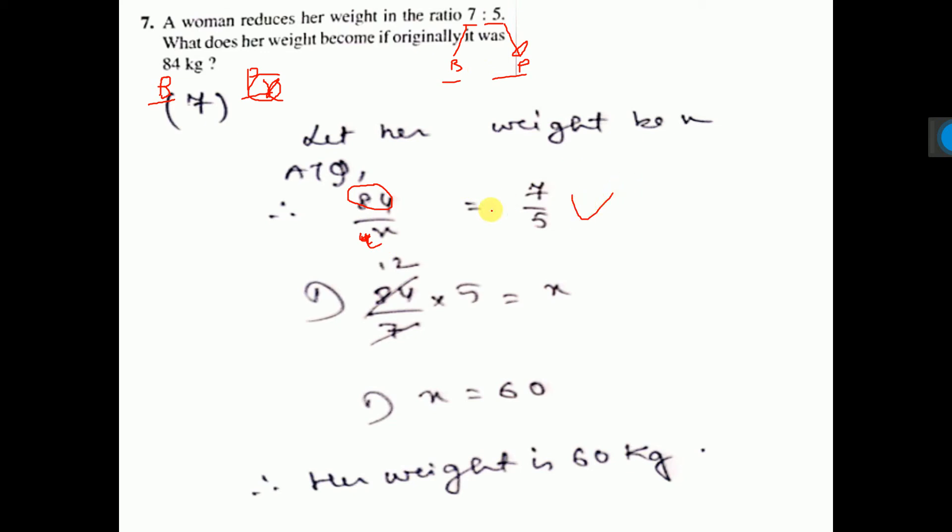Now x equal to what? x will go that side. What you can do? So that 7x equal to 84 into 5. So x equal to what? 84 into 5 by 7.